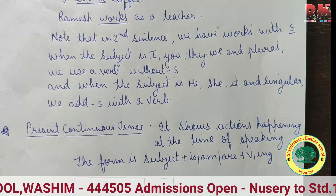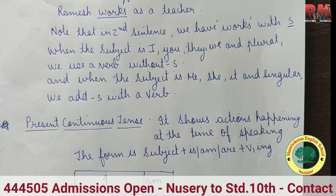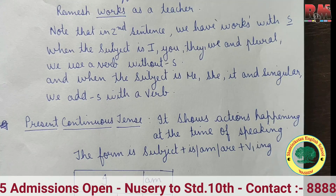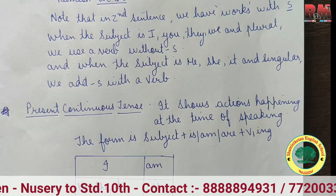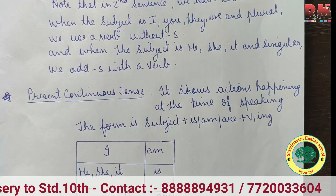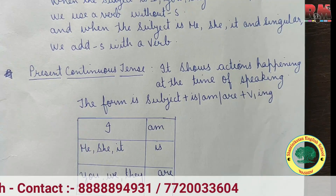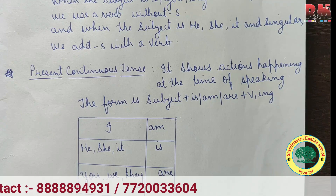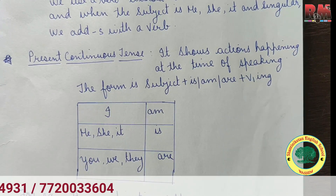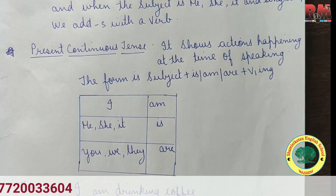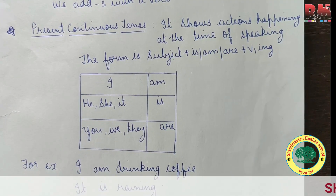Present continuous tense shows an action happening at the time of speaking. The form is subject plus am/is/are plus V1+ing (V4). For example: 'I am drinking coffee.' 'It is raining.' 'They are doing their work.'